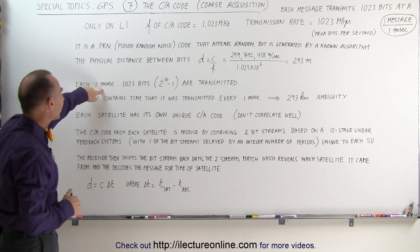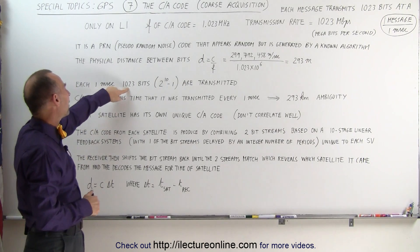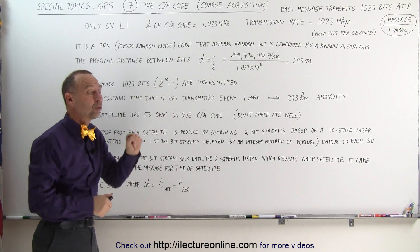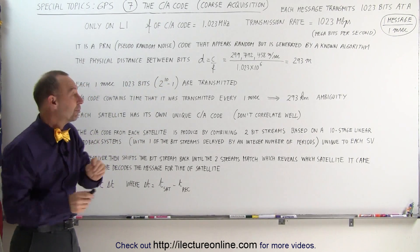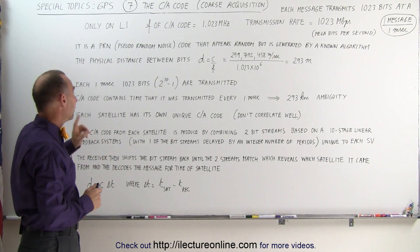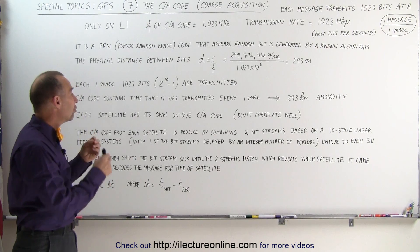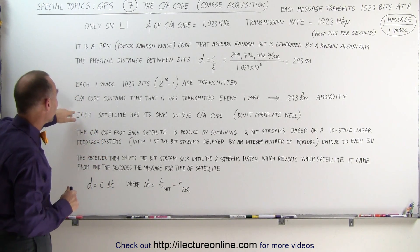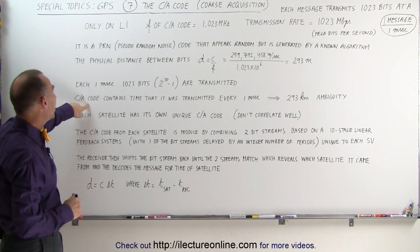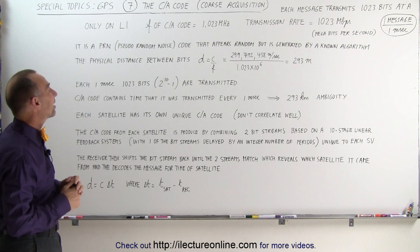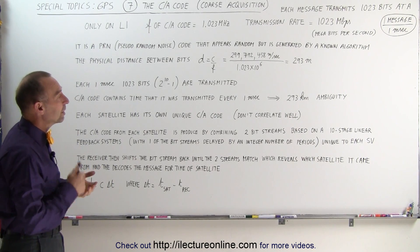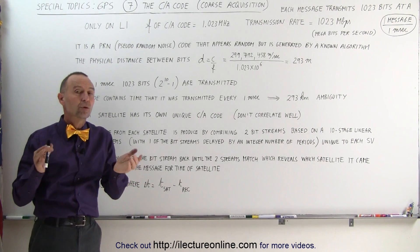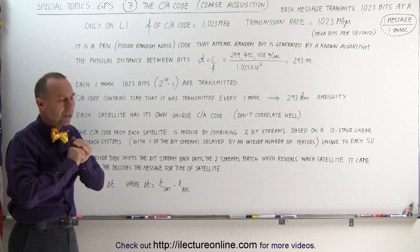Each millisecond, 1023 bits are sent, which is 2 to the 10th minus 1. There's a reason for that number because it is using a particular technique and we'll show you that in just a moment. The CA code contains the time it was transmitted every 1 millisecond, and therefore the 293 kilometer ambiguity.